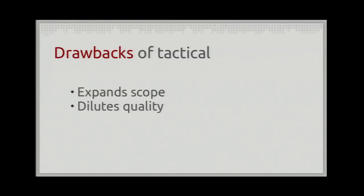Those are valuable contributions - OpenStack wouldn't be where it is today if we were closed to tactical contributions, and those made OpenStack what it is today. But there are a number of drawbacks. They tend to expand the scope of the project and add technical debt. If you don't put equivalent quality assurance resources into OpenStack in parallel, you basically make it more difficult to release and dilute the quality of the end result.